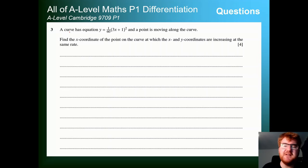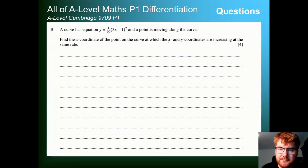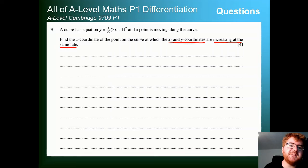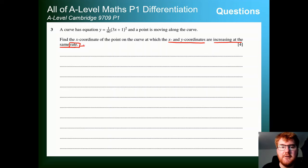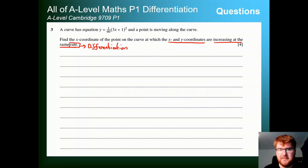So we have question 3 here — it's one of the easiest style questions. A curve has equation y equals 1 over 60 times (3x + 1) all squared, and a point is moving along the curve. Find the x-coordinate of the point on the curve at which the x and y-coordinates are increasing at the same rate. As soon as I see the phrase 'rate' in a maths question, I'm thinking differentiation.